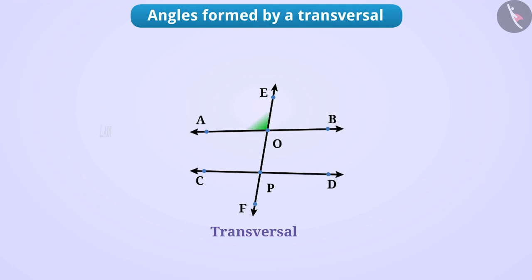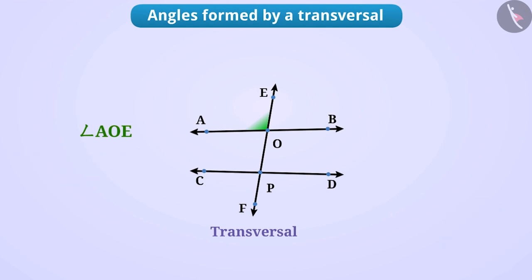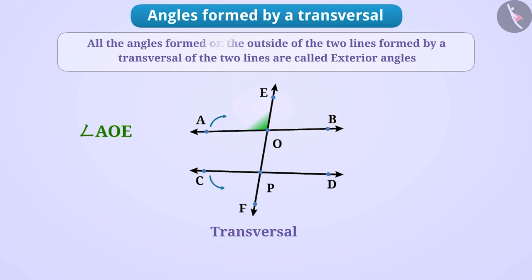Now, consider angle AOE. Can we call it an interior angle? Think for a while. This angle is outside of both lines AB and CD. All the angles formed on the outside of the two lines by a transversal of the two lines are called exterior angles.